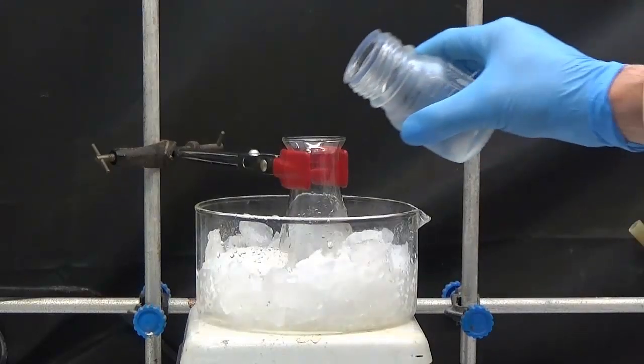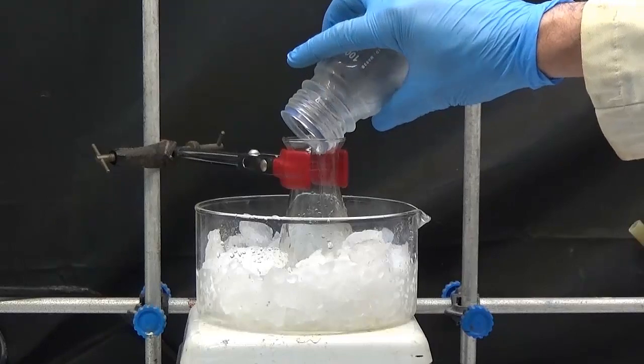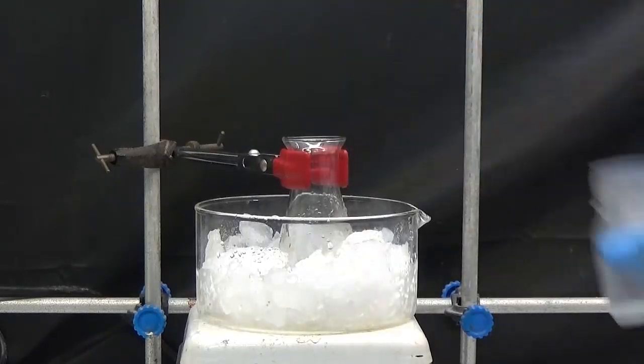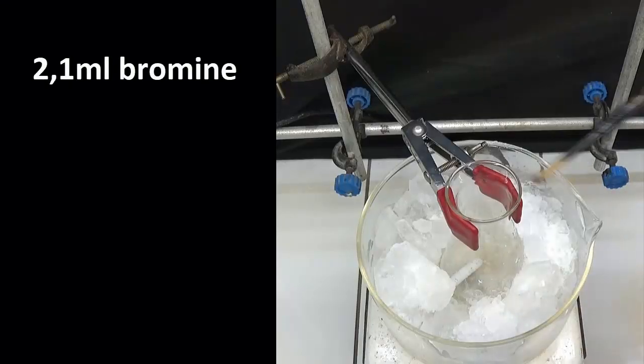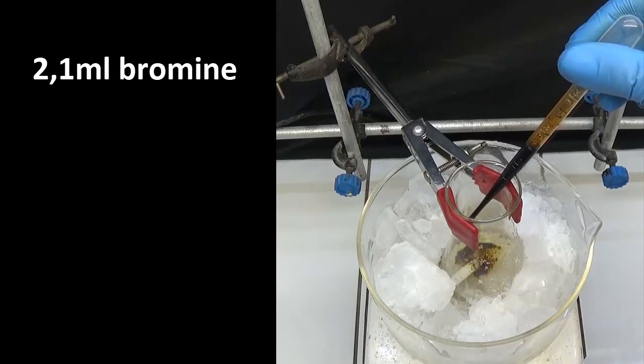Put the solution into a 100 milliliter Erlenmeyer flask cooled by a bath of ice. After the solution has cooled to zero degrees, add 2.1 milliliters of elementary bromine.